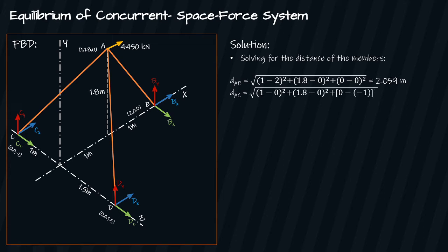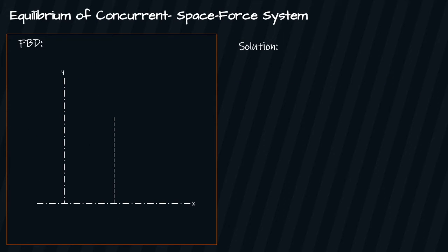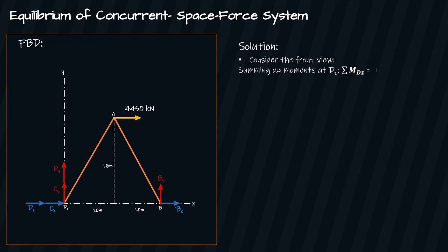Likewise for d AC we have, and d AD we have. To continue, we have to consider the front view or the x-y plane. Summing up moments at Dz, that is summation of M_Dz equals zero. Assuming clockwise direction of moment is positive, we have 4450 times 1.8 minus By times 2. By is definitely equivalent to 4005 kilonewtons.